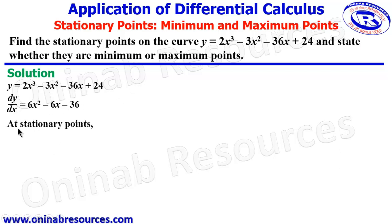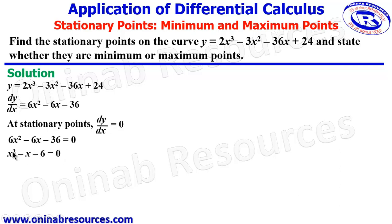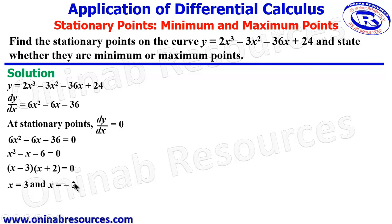At stationary points, dy/dx is always equal to 0, which means 6x squared minus 6x minus 36 equals 0. Dividing through by 6, we have x squared minus x minus 6 equals 0. By factorization, the factors are (x minus 3)(x plus 2) equals 0, giving x equal to 3 and x equal to negative 2.